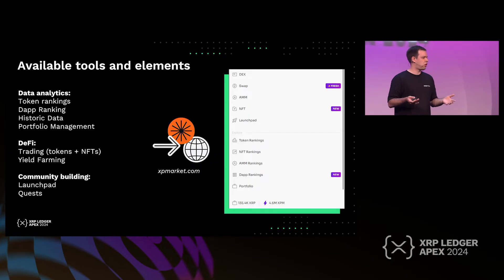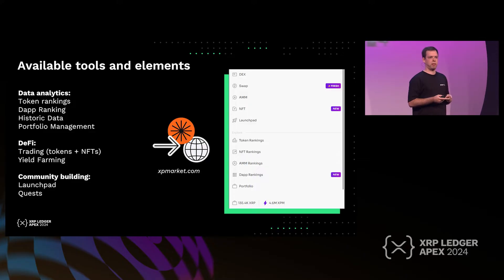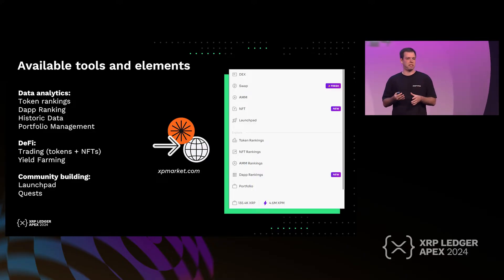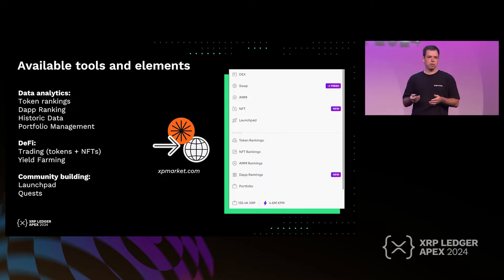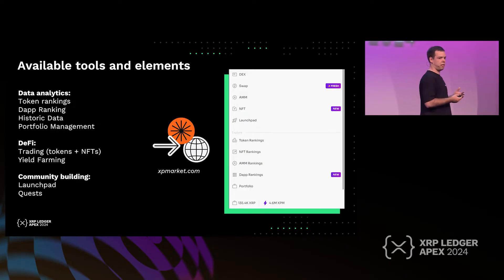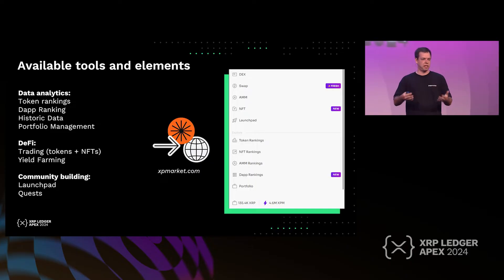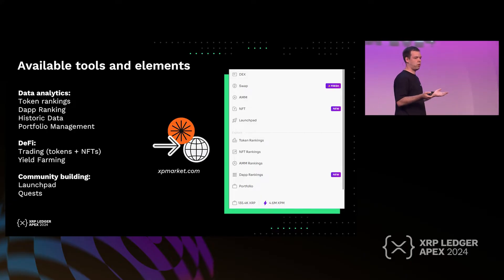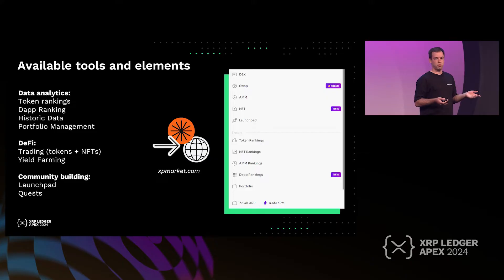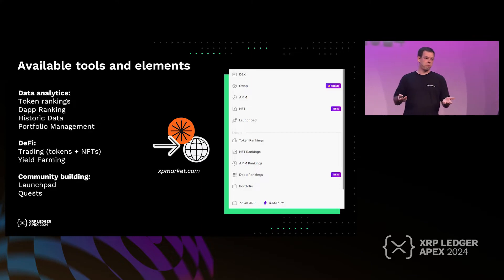DeFi is obviously a hot topic right now. With the addition of AMM, it became really interesting, and we can definitely see the interest — DeFi is growing, and we're already starting to see emerging yield farming protocols. On XRP Ledger, yield farming is not a native feature and cannot be built on top of XRP Ledger as native functionality, so we have to be creative, and we're already seeing these projects emerging. Finally, community-building elements such as launchpads and quests will help both developers and the community familiarize with new projects and understand the Ledger.